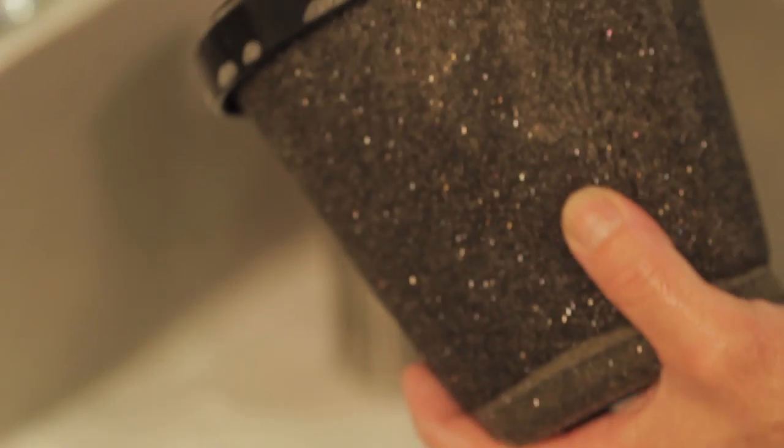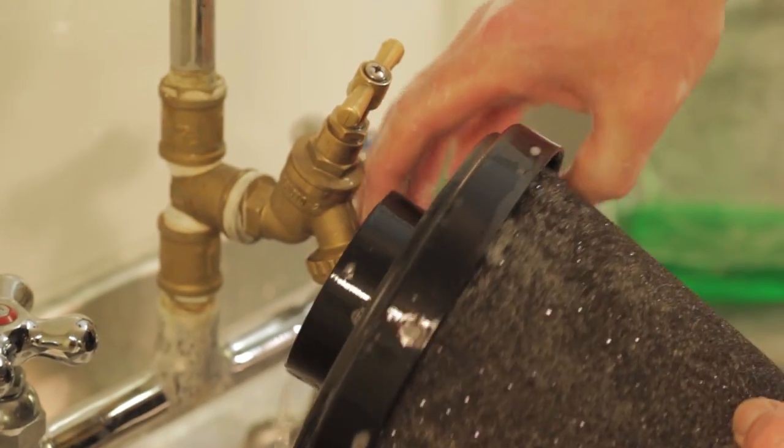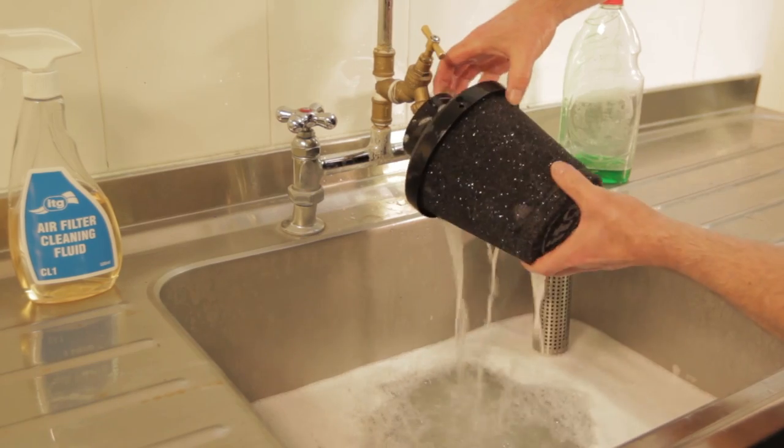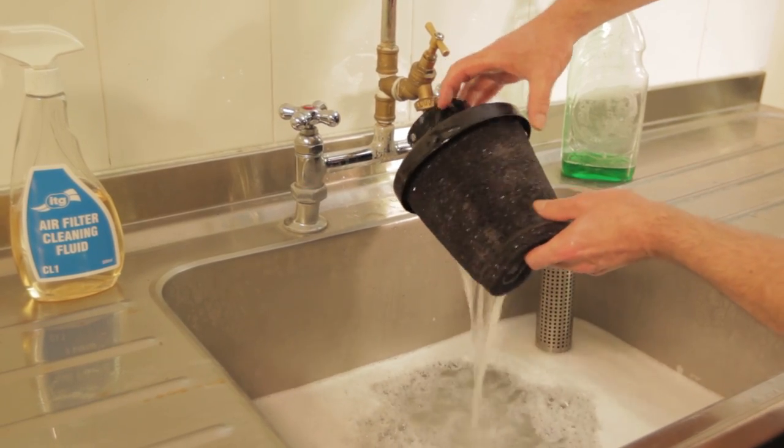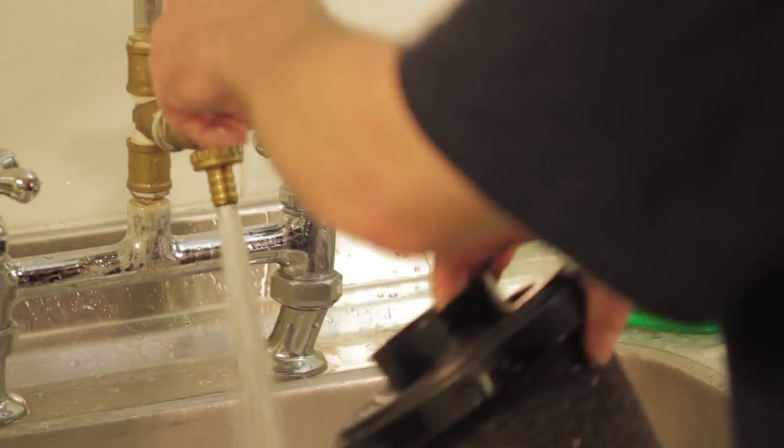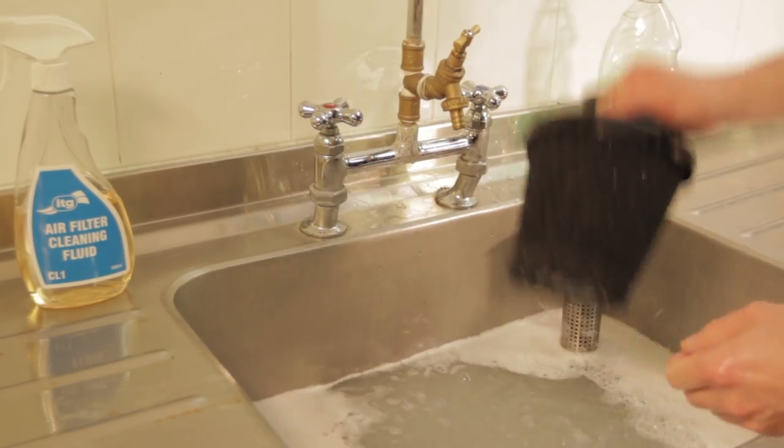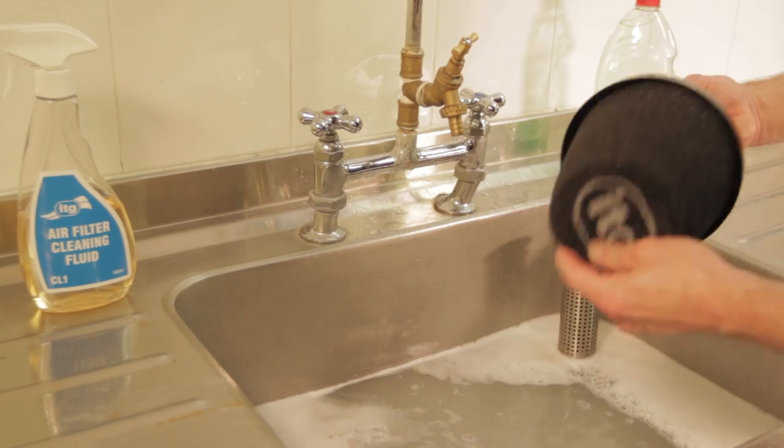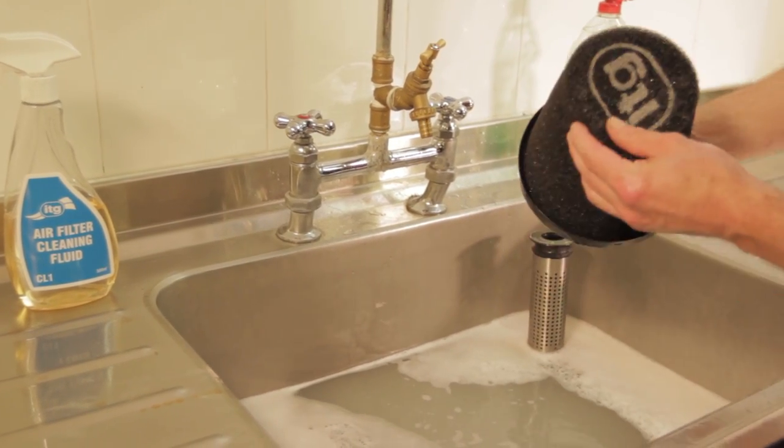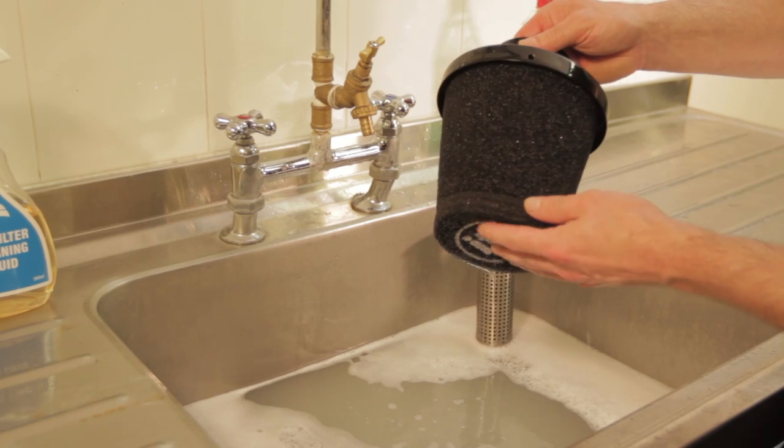At various stages as you go through this process, it's always a good idea, again with the tap, just to try and back flush anything through. Just get it running through until it's all nice and clean. Then when you're fairly sure that you've got all the washing up liquid out, you're ready to swill it out in the sink of fresh water.